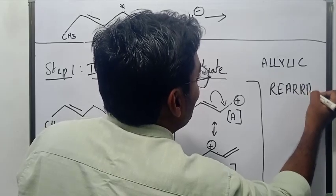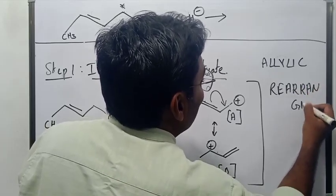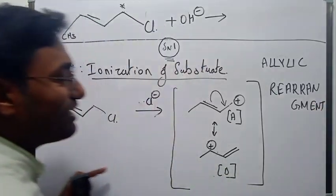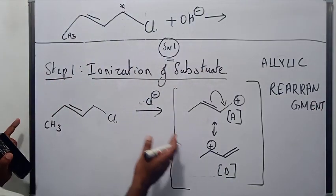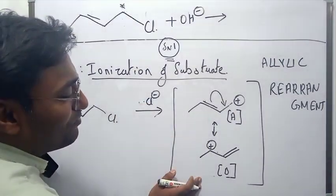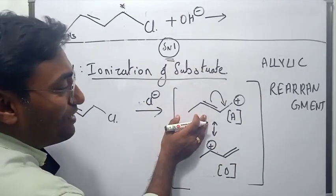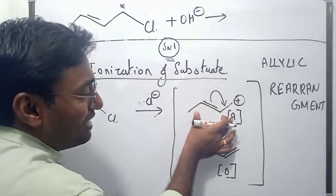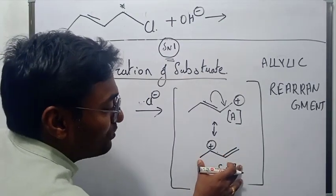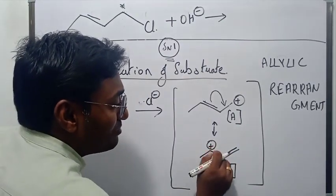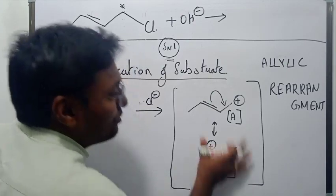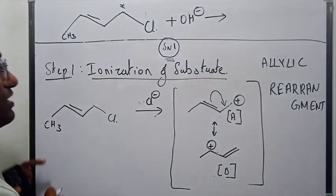So we now have two kinds of carbocations — carbocation A and carbocation B. Until now, for simple alkyl halides, we saw only one kind of carbocation. But for an allylic halide we get two: carbocation A, which is the normal expected carbocation, and carbocation B, which arises due to allylic rearrangement — rearrangement of the double bond to the allylic carbon. Step two is the attack of the nucleophile.